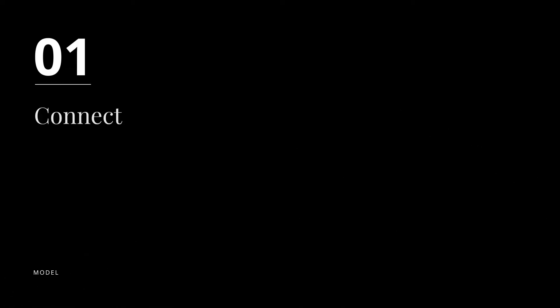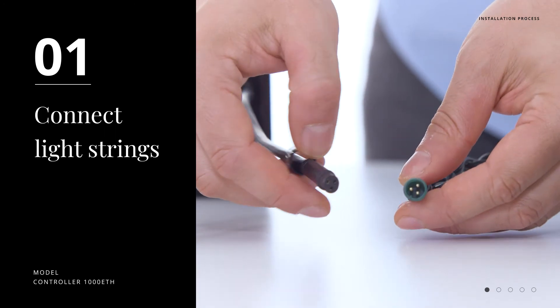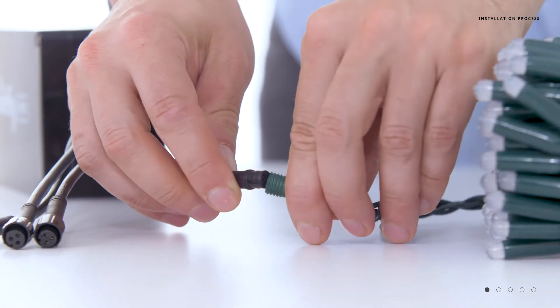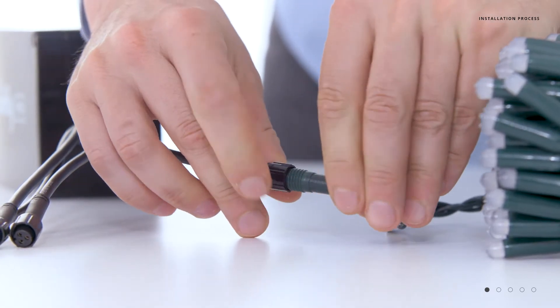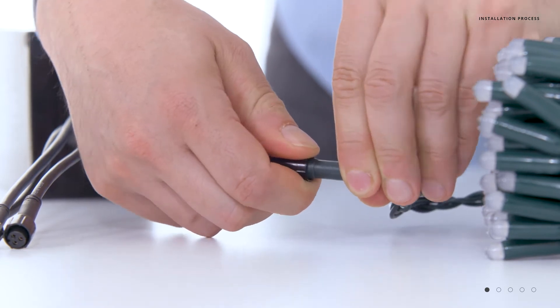Step one, connecting the light strings. We always recommend connecting the light strings to your controller prior to powering up. Pay close attention to the polarized connections as there's only one way to plug them in. Screw down the collar of the connector to ensure a watertight fit.